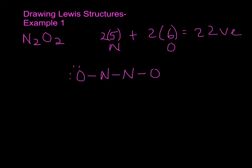The next step is to distribute the rest of the electrons in the molecule, starting from the outer atoms and going in. We've used up six, so continuing: eight, ten, twelve, fourteen, sixteen, eighteen — four left, so twenty and twenty-two. Now, does everybody have an octet? Oxygen has eight electrons around it, both oxygens do, but nitrogen only has six — the two single bonds plus the lone pair.